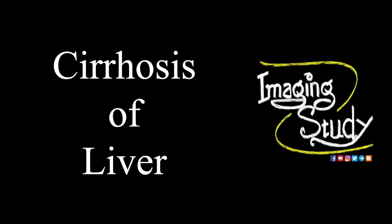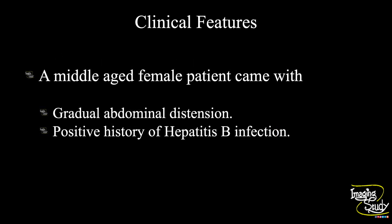Hi everyone, welcome to Imaging Study. Today we are going to see a case of cirrhosis of the liver. A middle-eastern female patient came with gradual abdominal distension; she had a positive history of hepatitis B virus infection. Let's see what we have got on ultrasound.